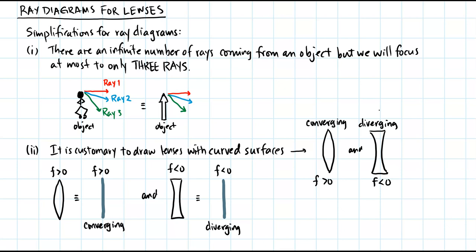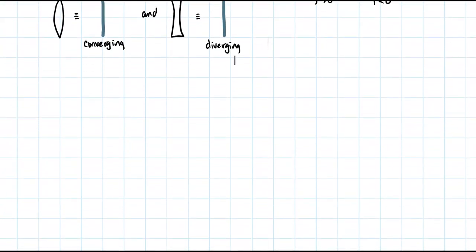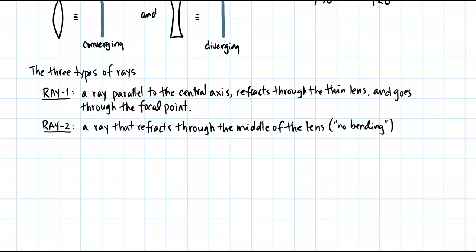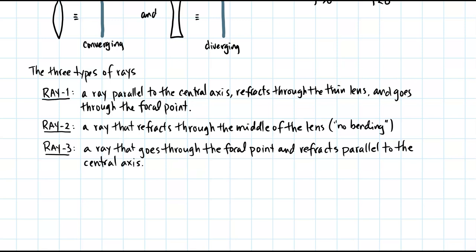Now let's look at what the three rays are. Ray one goes parallel to the central axis, refracts through the thin lens, and goes through the focal point. Ray two refracts through the middle of the lens, and because it's a thin lens, the ray appears to have no bending. Ray three goes through the focal point first and then refracts at the lens parallel to the central axis.